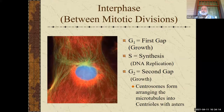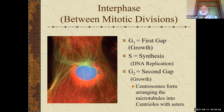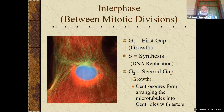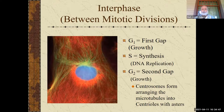The next phase is S, which stands for synthesis — this is DNA replication. This is where the second copy of DNA is made for the extra chromosome before division, or the new chromosome for the new cell. Then G2 is the second gap, also featuring growth and protein synthesis. This is also where organelles replicate and the cell tries to increase their amount.